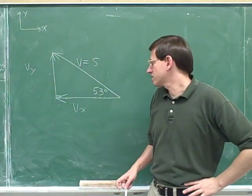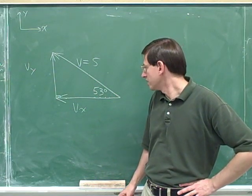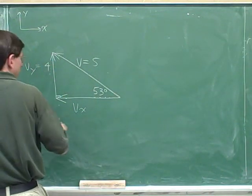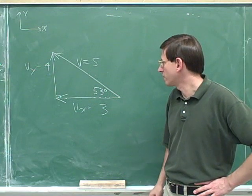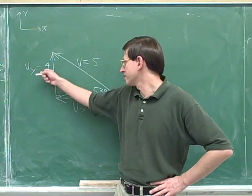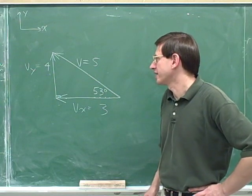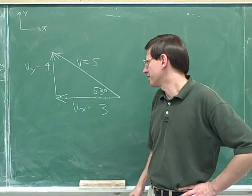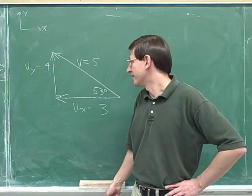I'm not going to ask you to calculate the components here — I'm just going to tell you what they are. This component is going to be 4, and this component is going to be 3. Just take those numbers on faith. I'm not really drawing this to scale, so even though on the board the vertical leg appears shorter than the horizontal one, the actual values are 3 and 4.